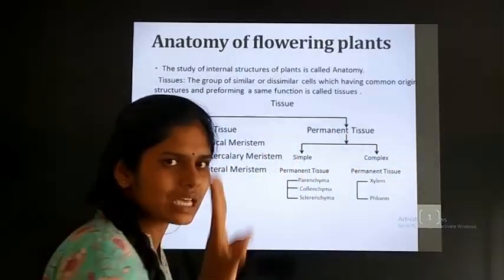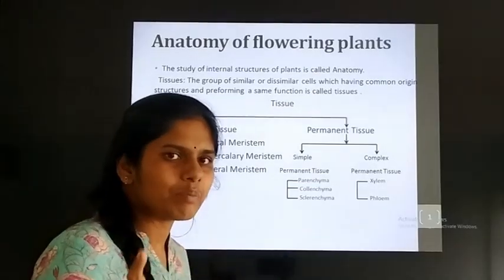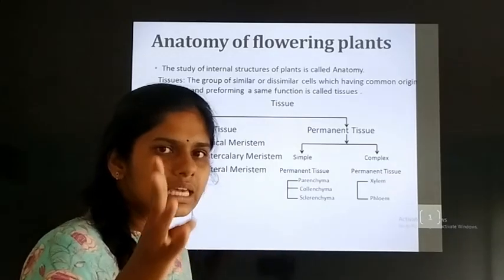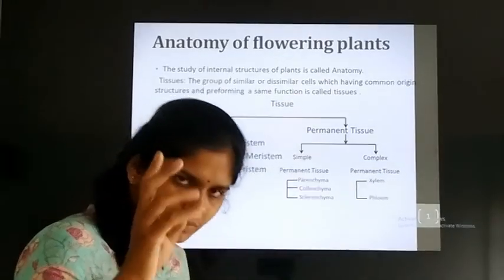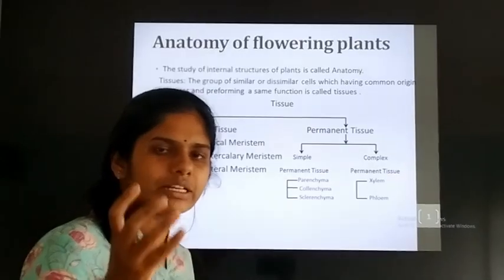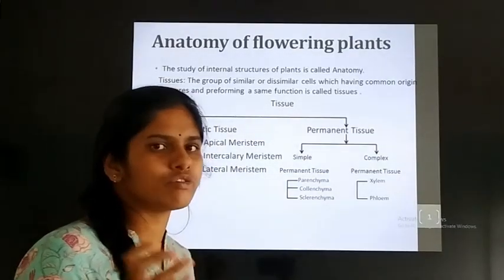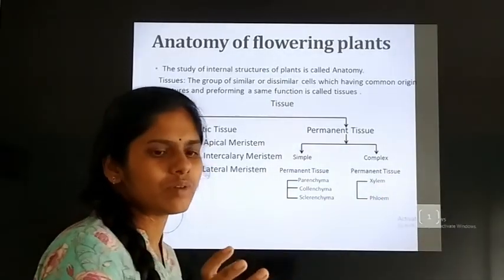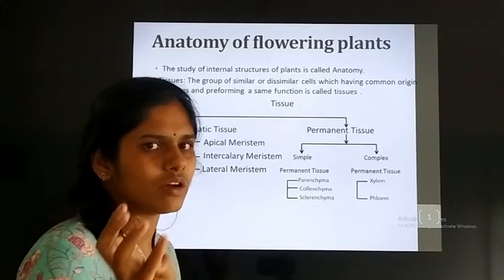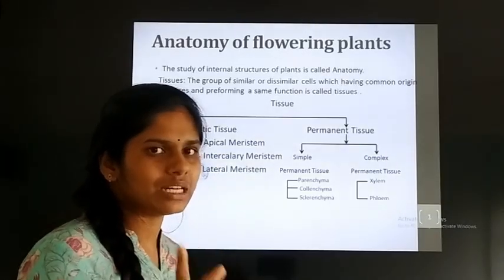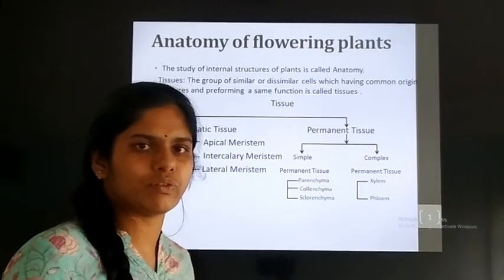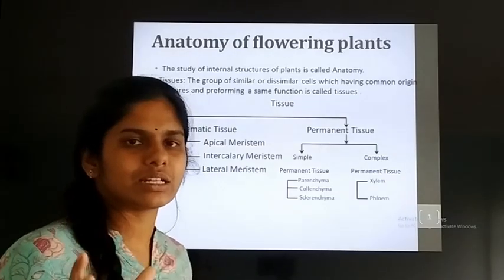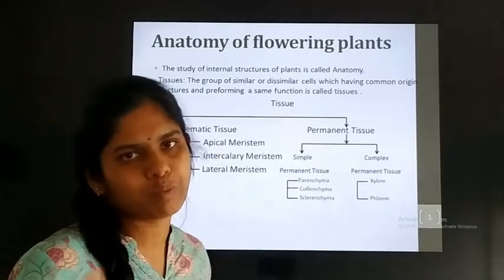Xylem mainly consists of four xylary elements: tracheids, vessels, xylem parenchyma, and xylem fibers. Out of four xylem elements, tracheids and vessels are involved in the conduction of water. If a plant consists of vessels, the plant belongs to the angiosperm.